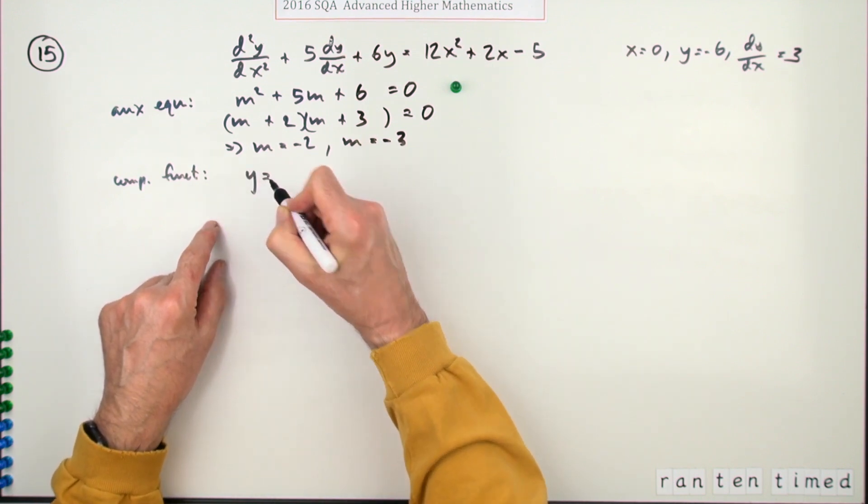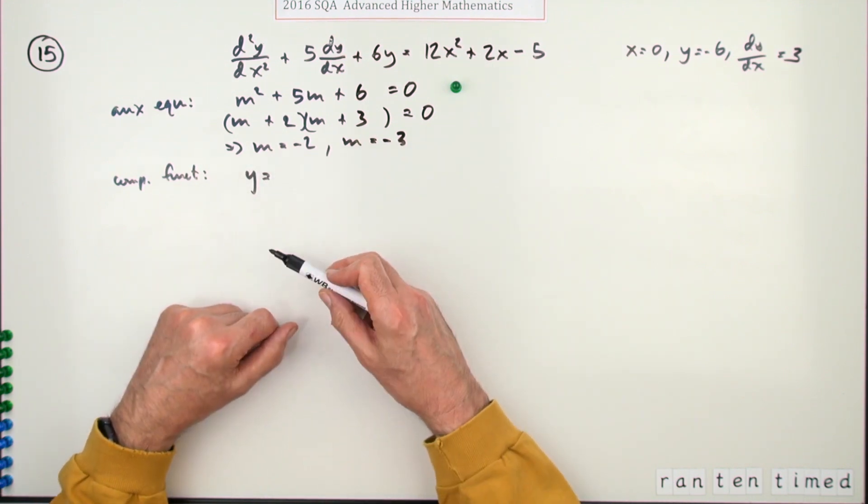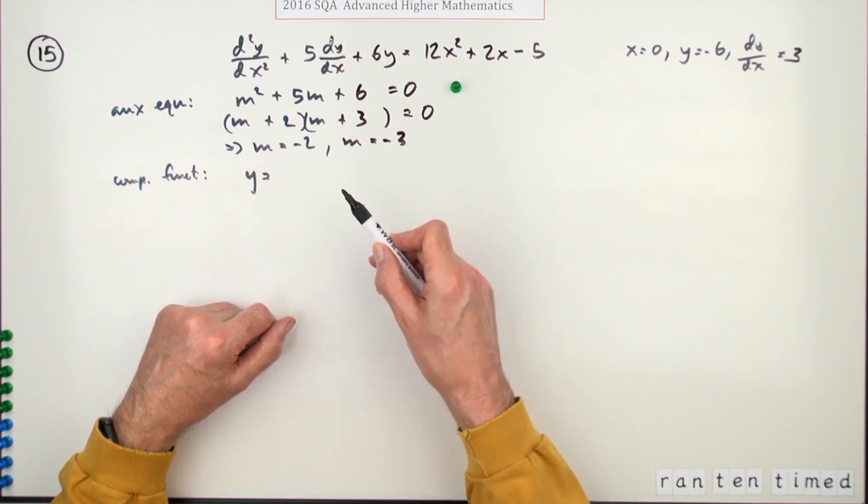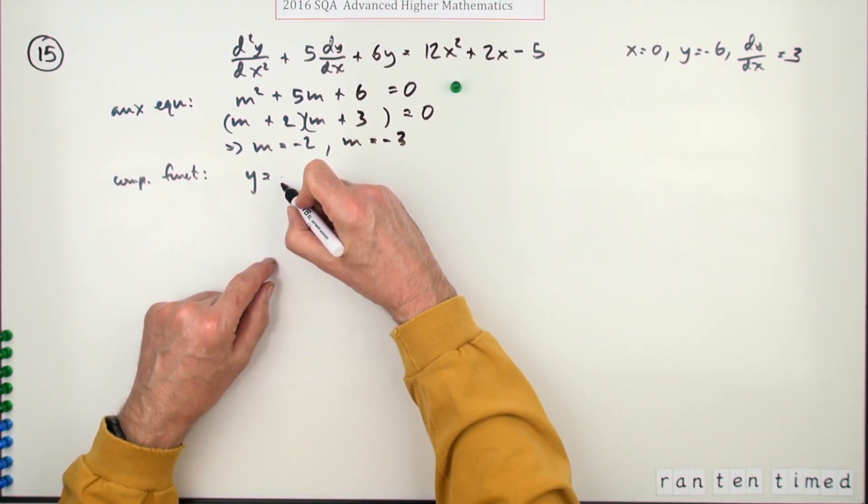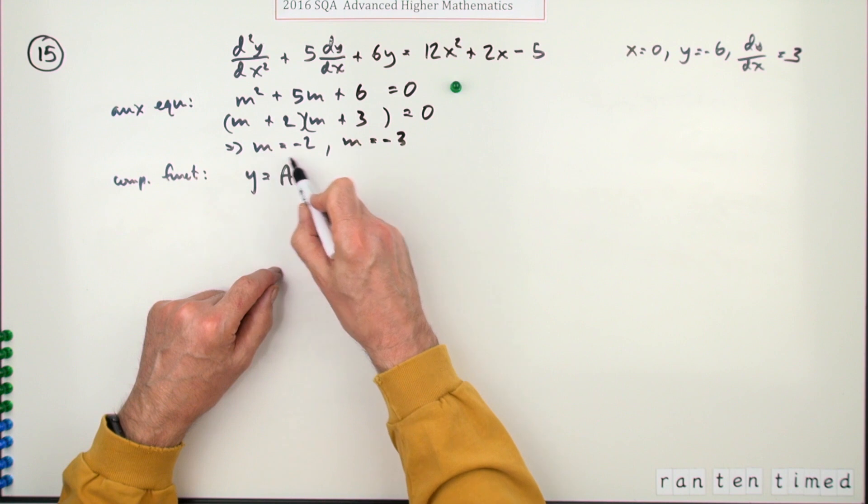So that means m is equal to negative 2 and m is equal to negative 3. Don't get a mark yet. So now you can form your complementary function. You get this one for free, and that will be y is equal to, now either of those would work on their own, and so would a linear combination of them.